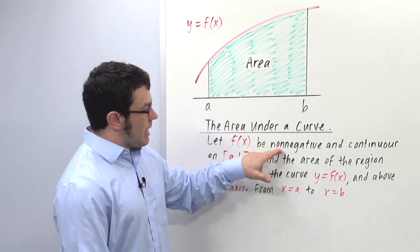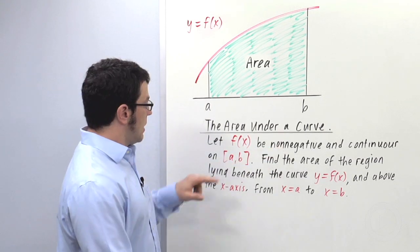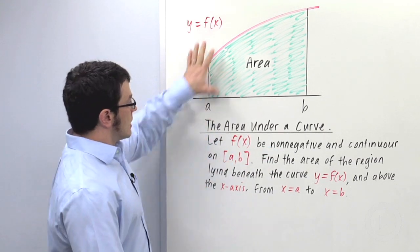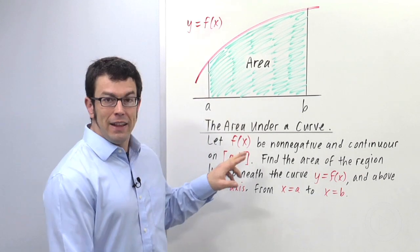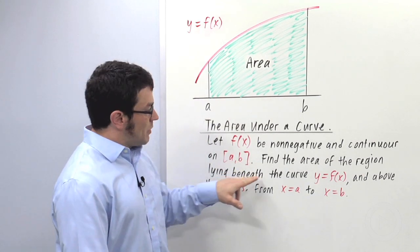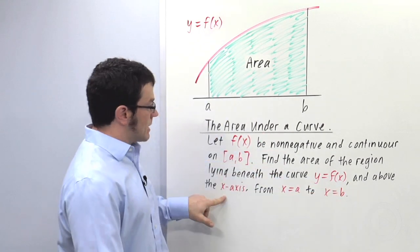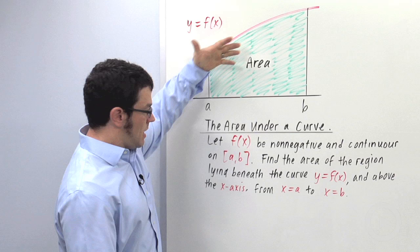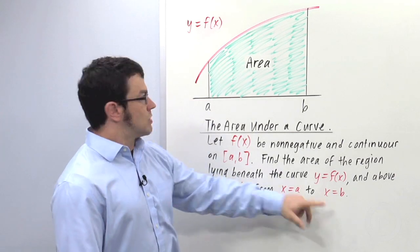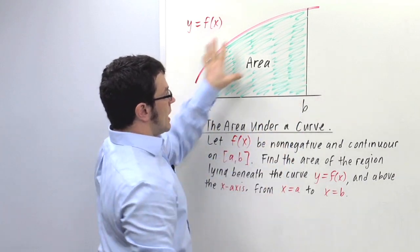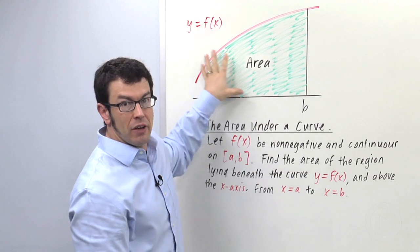Let f(x) be a non-negative and continuous function on the interval [a,b]. That's what we have drawn here. Find the area of the region lying beneath the curve y=f(x), so below this red curve, and above the x-axis from x=a to x=b, so between these two vertical lines. We're looking for the exact area of this region.